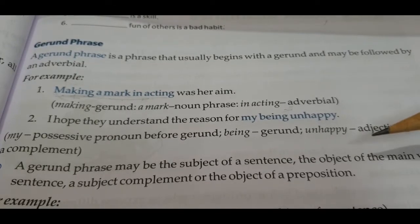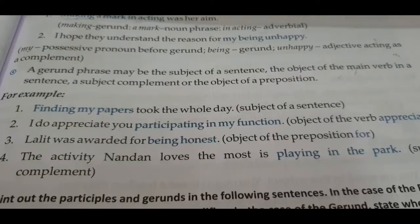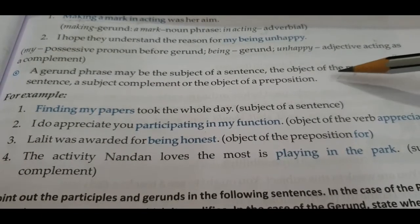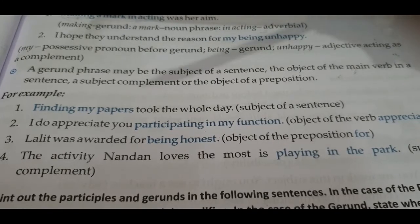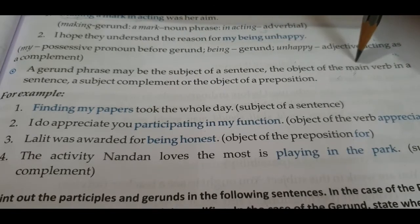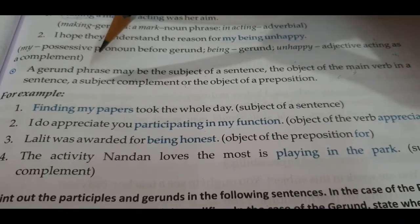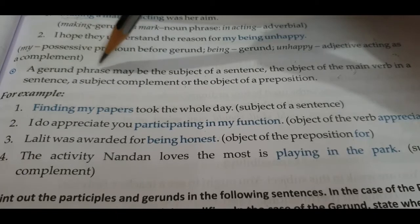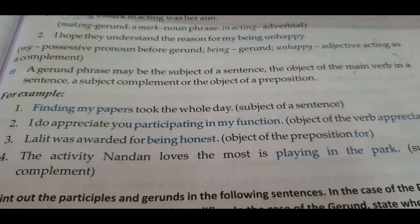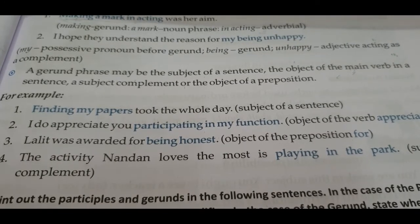A gerund phrase may be the subject of a sentence, the object of the main verb, a subject complement, or the object of a preposition — the uses are the same as those of a gerund. Basically, a gerund phrase is any group of words that follows a gerund and helps make the gerund complete.